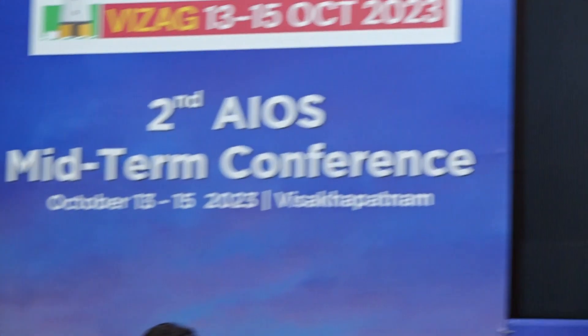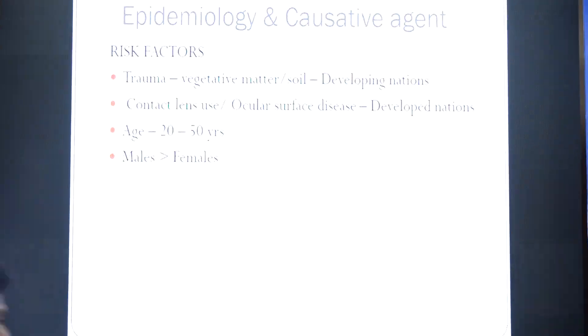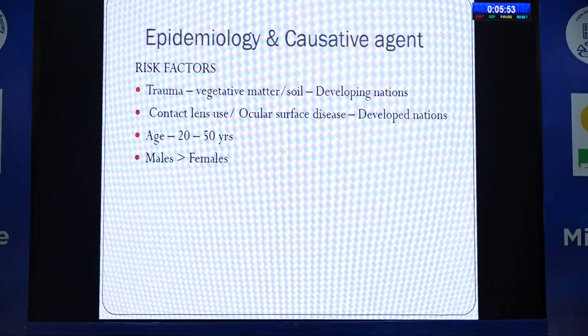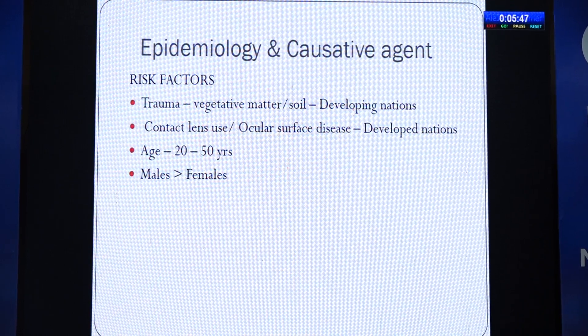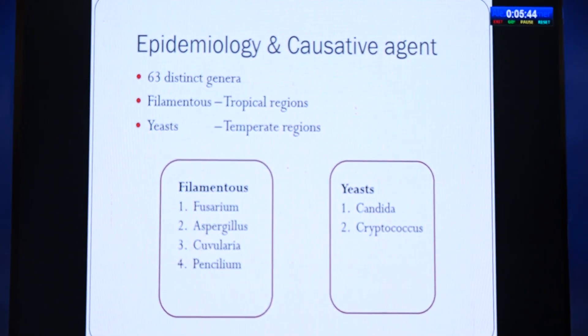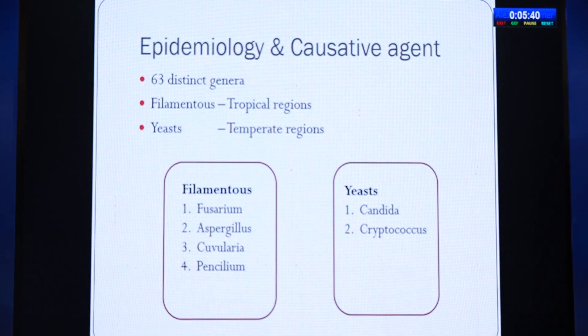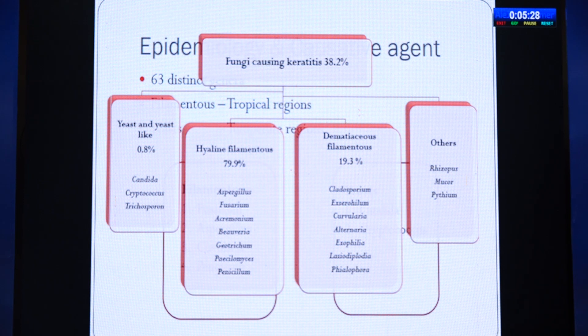Countries with agriculture-based economies have more fungal keratitis. Basic risk factors: trauma with vegetative or soil matter in developing nations, and contact lens use or ocular surface disease in developed nations. The most common age group affected is 20 to 50 years; males are more affected than females. There are 63 different genera of fungi that can affect the eye — the most common being fusarium, Aspergillus, curvularia, and Penicillium (filamentous fungi). Yeast infections are more common in temperate regions.